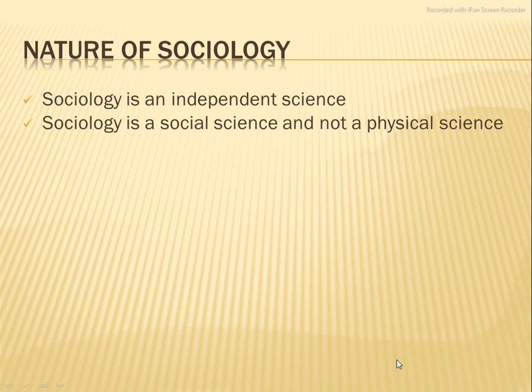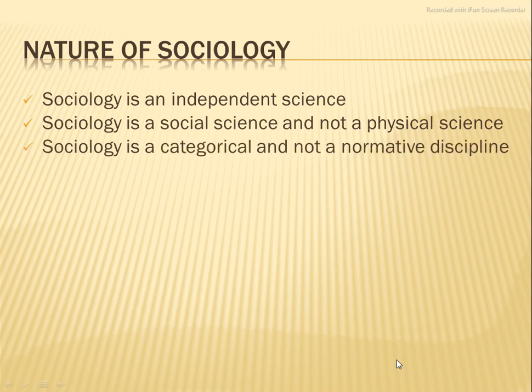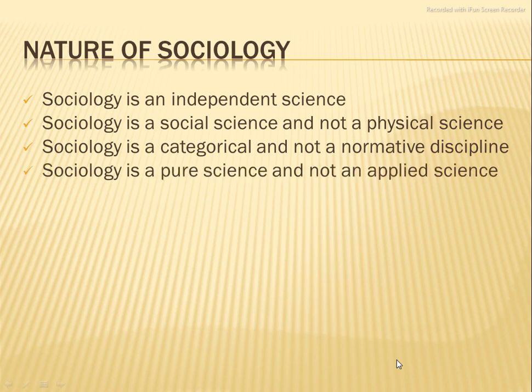Sociology is a social science and not a physical science — it is a study of society, not of physical objects. Sociology is categorical and not a normative discipline. Categorically means you divide things into categories — those with the same culture or dress belong to a certain state or category. It is not normative, because every person is different. With billions in population, billions of cultures would exist, but that is not the case.